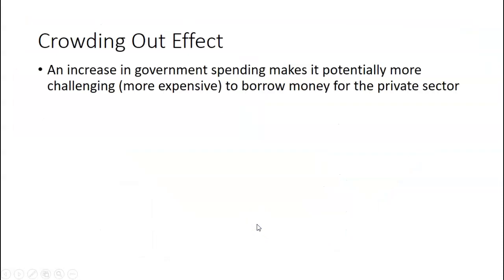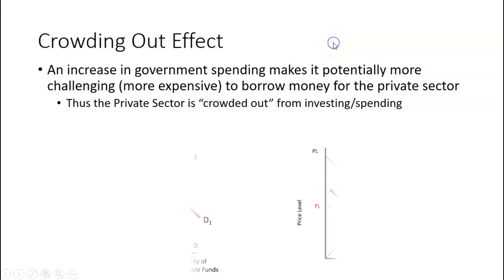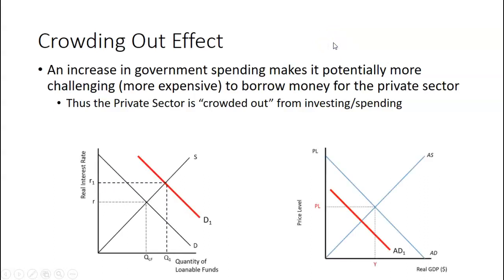So in case we need a little definition, an increase in government spending makes it potentially more challenging, more expensive to borrow money for the private sector. Thus the private sector is crowded out from investing and spending. So the increase in demand for loanable funds caused by the increase in government spending will thus cause a decrease in the aggregate demand curve.